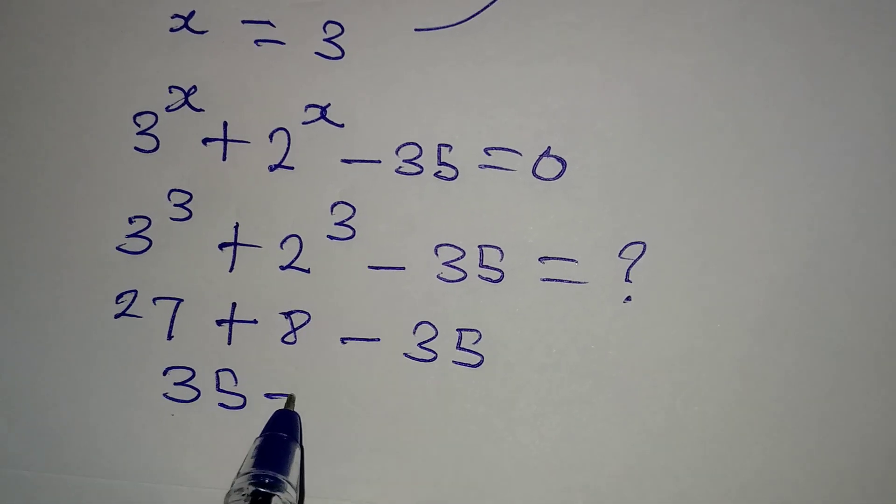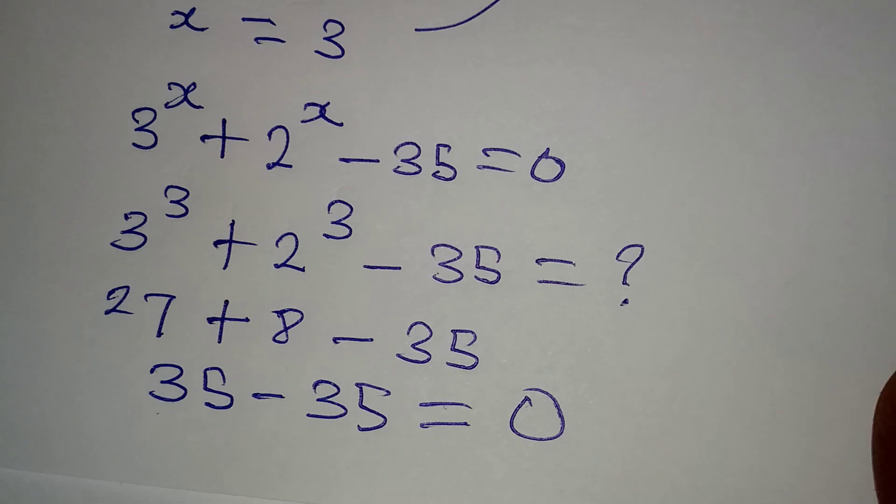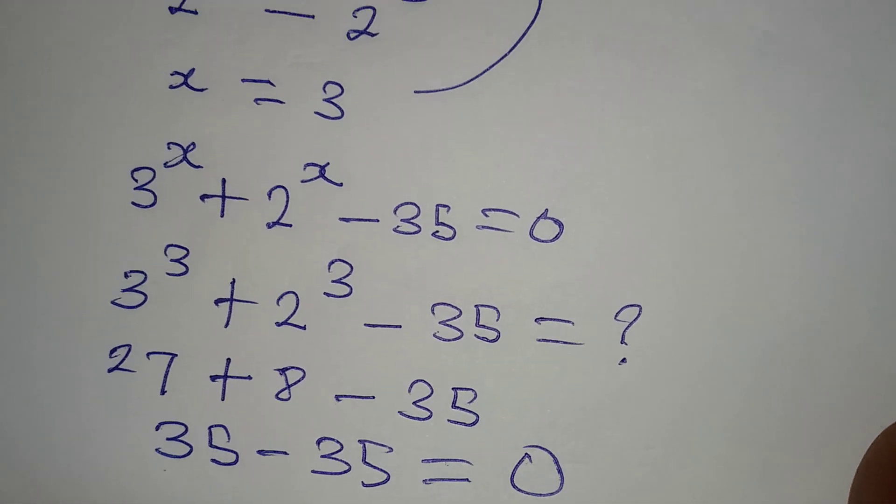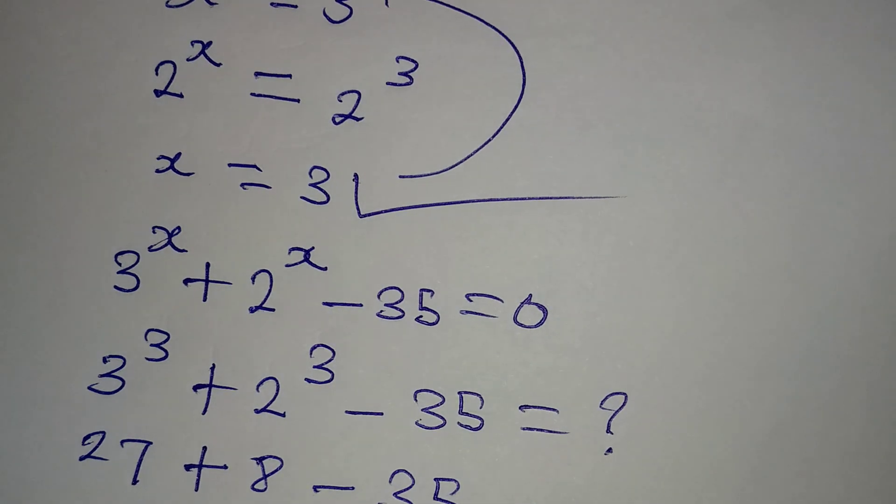35 minus 35, which equals 0. This confirms that x = 3 is very correct.